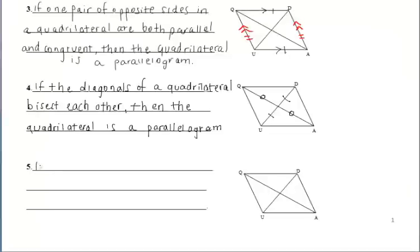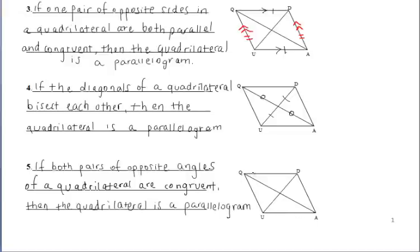Last but not least, if both pairs of opposite angles of a quadrilateral are congruent, then the quadrilateral is a parallelogram — the converse of another property of a parallelogram. For all five ways, we're essentially taking the converses of the properties of parallelograms that we already learned.